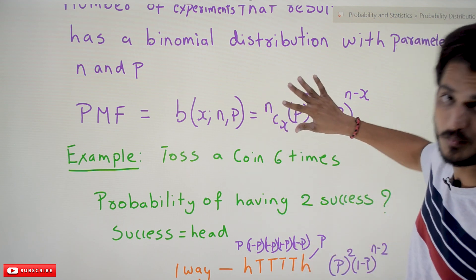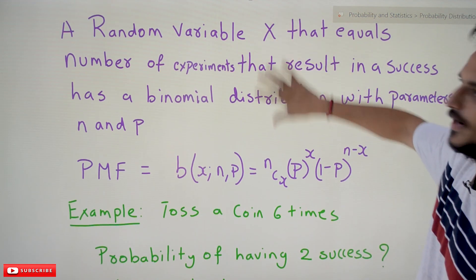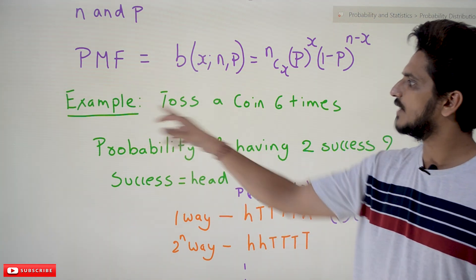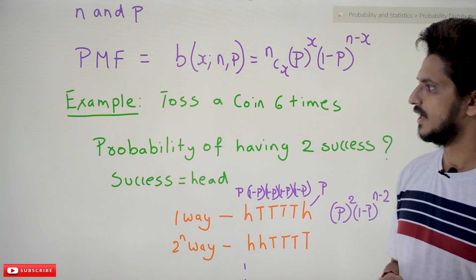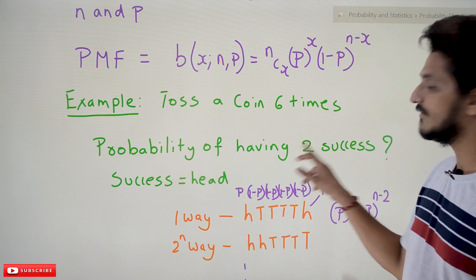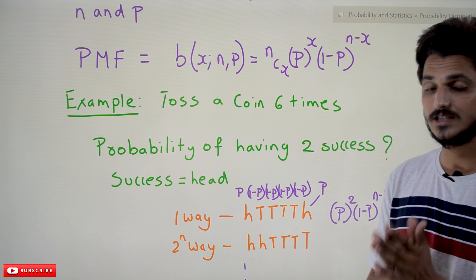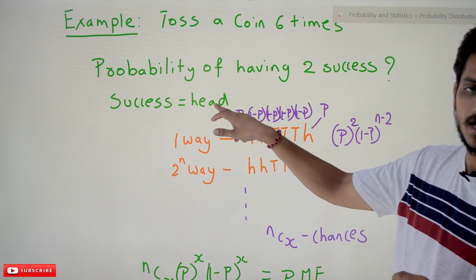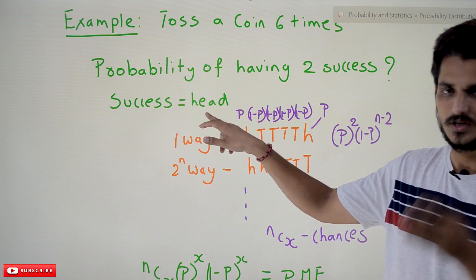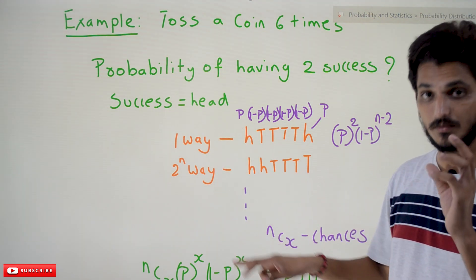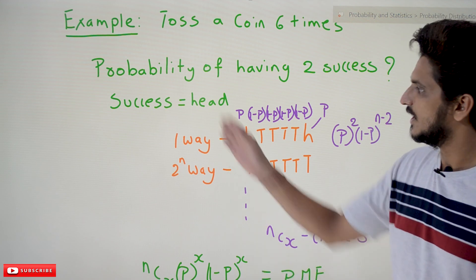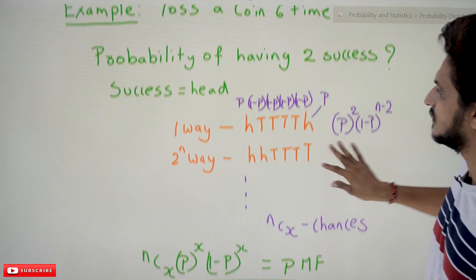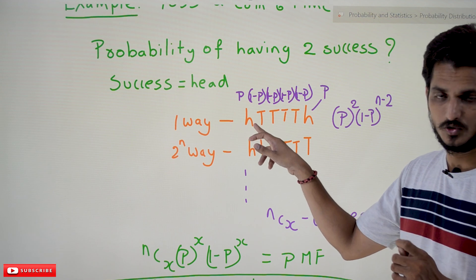First we have to understand how we got this probability mass function, then we are going to understand that statement. So let's take an example: toss a coin six times. They are asking for the probability of having two successes, where success means head. What is the probability of getting success p? What is the probability of getting failure? It is 1 minus p, because from the Bernoulli experiment concept, if success is p then failure is 1 minus p.